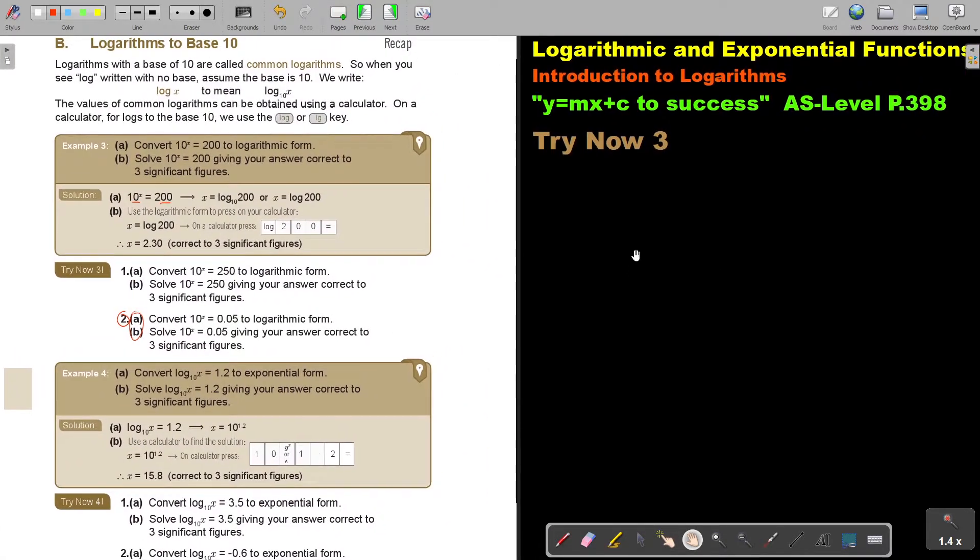Okay, here we are. And let's start with number 2a. Convert 10 to the power x equals 0.05 to logarithmic form.